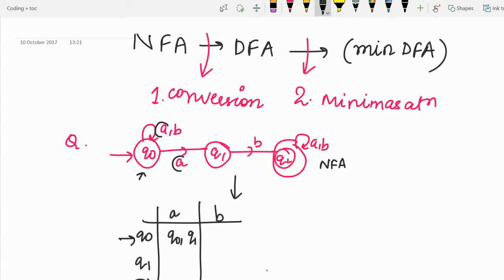And Q0 on B is going to Q0 only and Q1 on A is going to nowhere. So this is not allowed in the case of DFA. DFA does not allow nothing and does not allow more than one. It needs exactly one. So Q0 on B is Q2 and Q2 on A is Q2 and Q2 on B is Q2 itself. So this is our NFA.